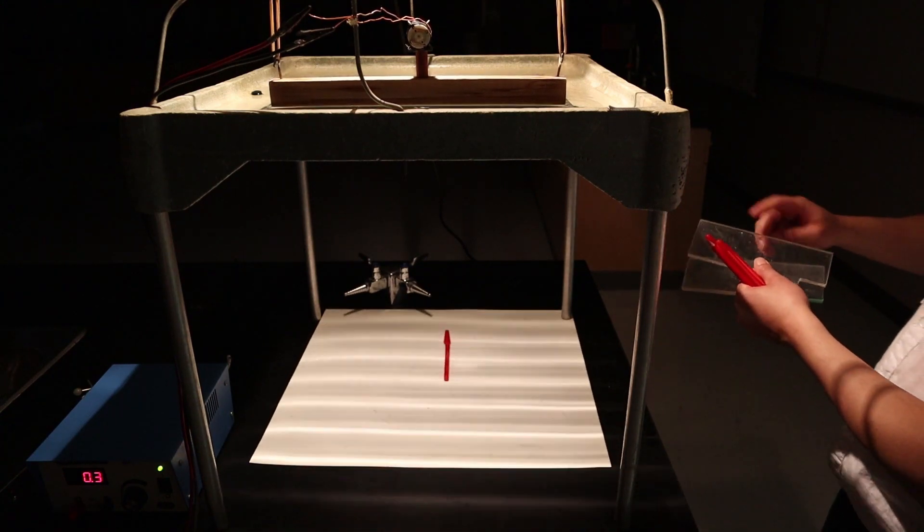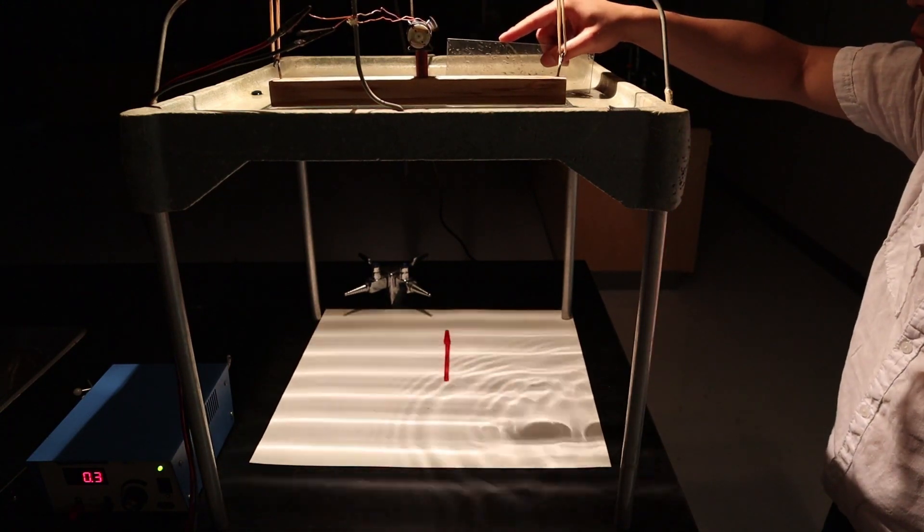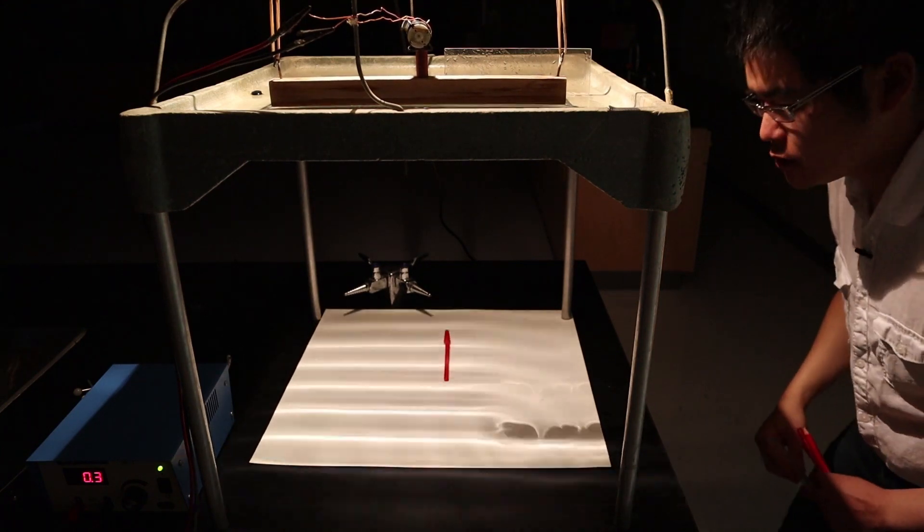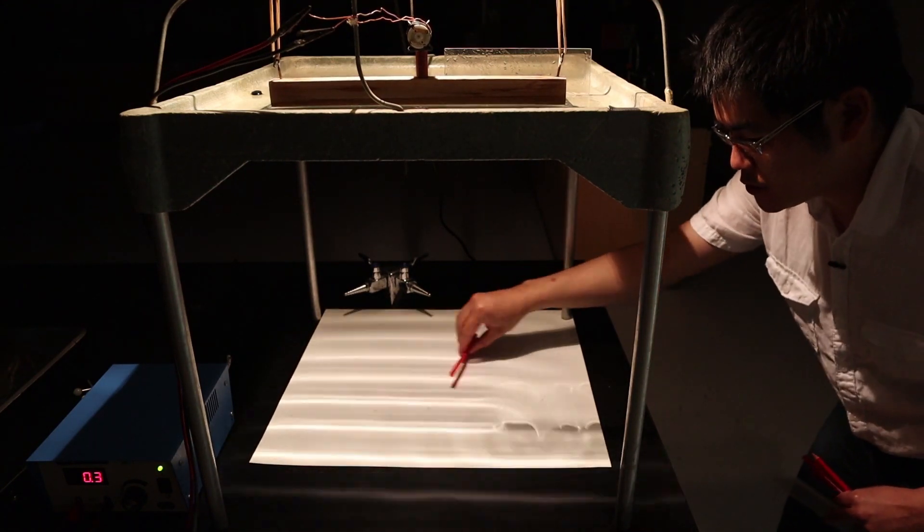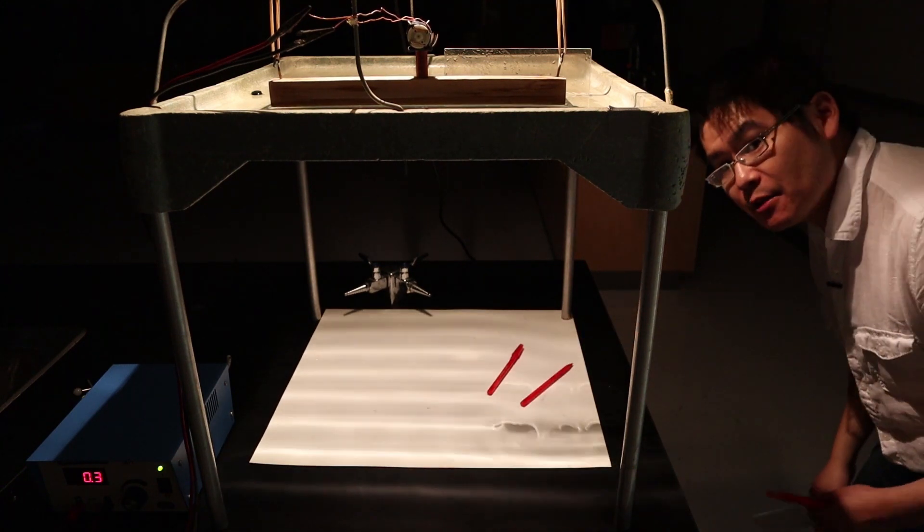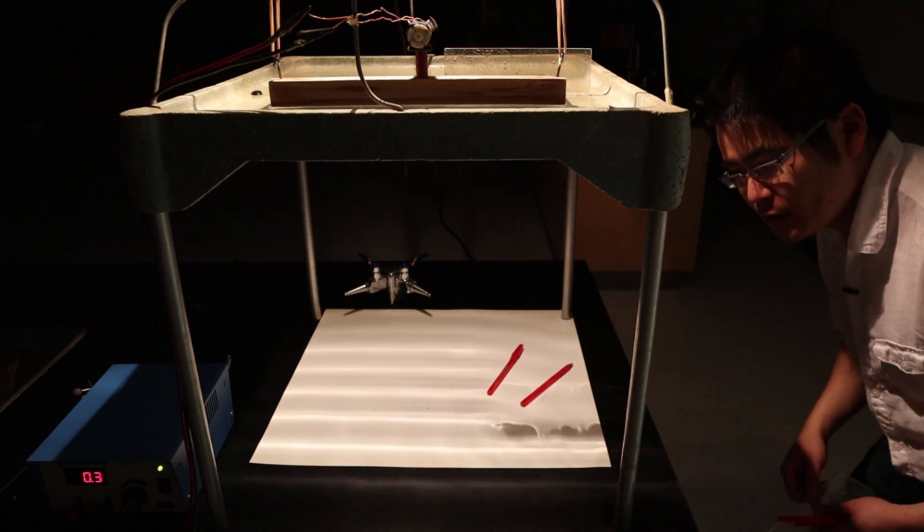If I block this water pathway with an obstruction, you can see that the water now starts to curve around the corner. Anything that behaves as a wave will exhibit this phenomenon.